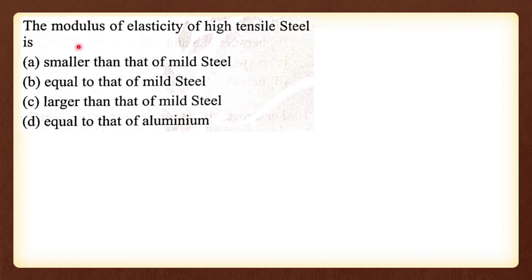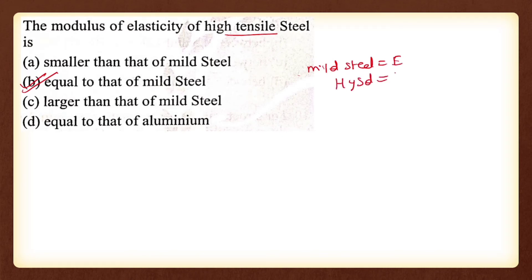The modulus of elasticity of high tensile steel is equal to that of mild steel. Whether it is mild steel or HYSD bar, Young's modulus E remains the same — only the grade changes, not E. Option B is the correct answer.